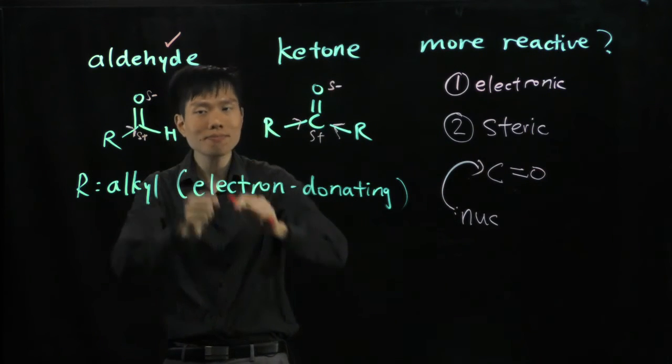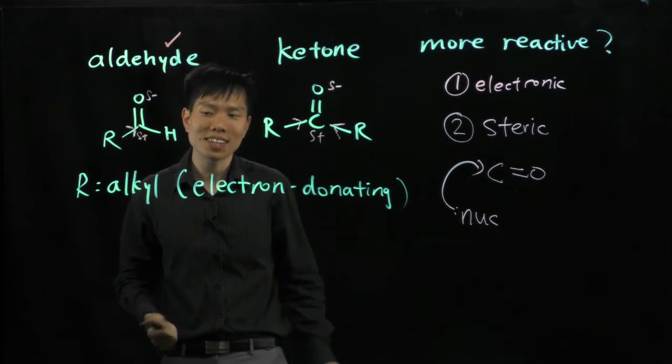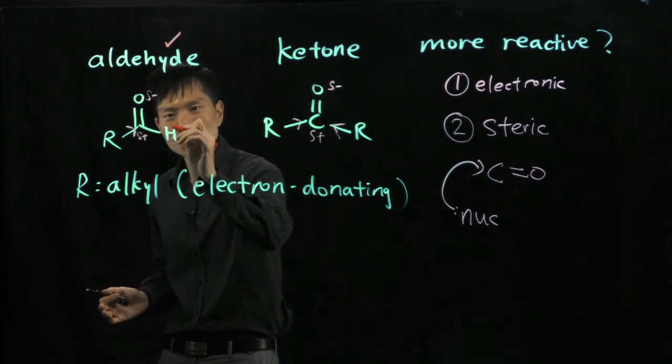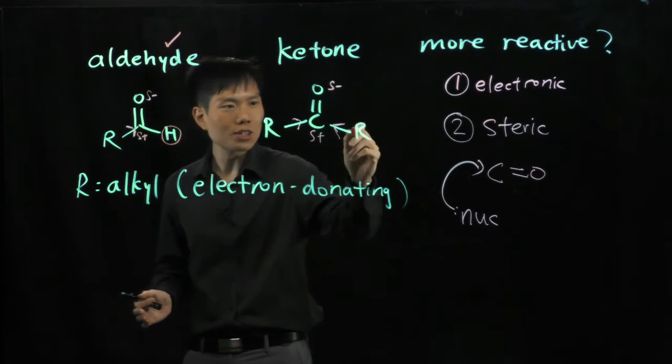Hydrogen, a small atom, against an R group, an alkyl chain. You know the answer. H is so tiny, R is so big.